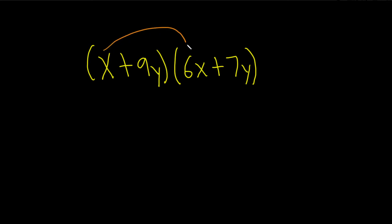So we'll do x times 6x. That'll give us 6, and then x times x is going to give us x squared. Then we do x times 7y. That's going to give us plus 7xy.